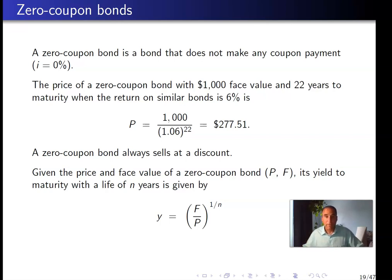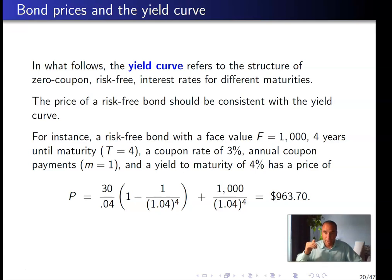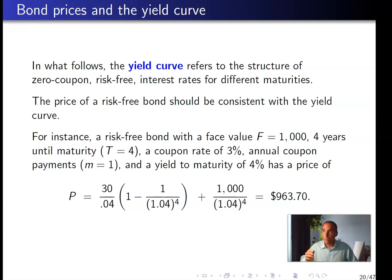Now the yield curve. So far, we have calculated the price of bonds using a yield to maturity — a single constant rate applied to all coupon payments as well as the face value. These yields to maturity have to be consistent with the yield curve. The yield curve is a description of all the interest rates that should be used for payments received at different periods in time.